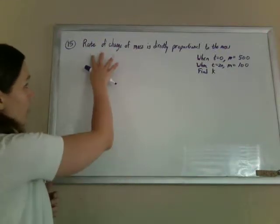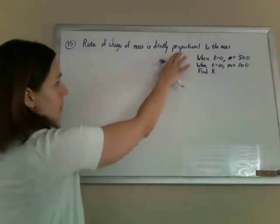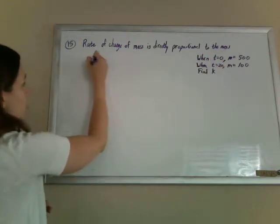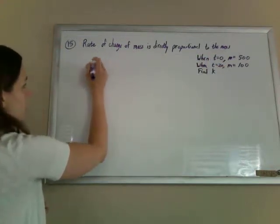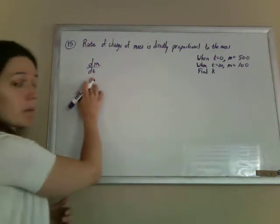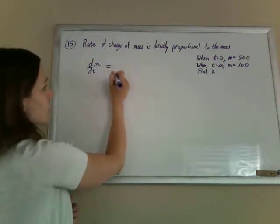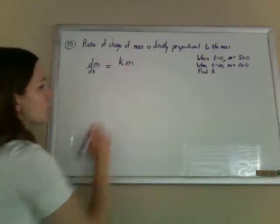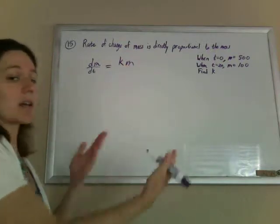Okay, so they tell me that the rate of change of mass is directly proportional to the mass. So translating this, the rate of change of mass is the derivative of the mass with respect to time, dm/dt, and that's directly proportional to the actual mass of the object, so it equals k times m.